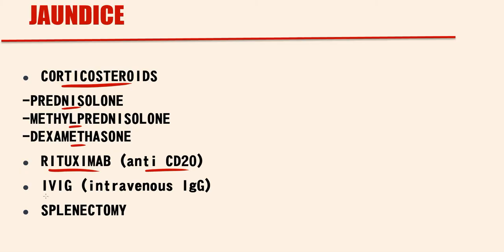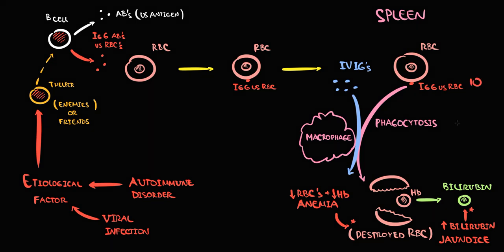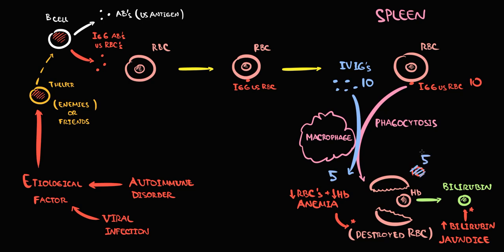The next option is intravenous immunoglobulin G, which causes a short-lived increase in red blood cells. The concept here is that with infusion of intravenous immunoglobulin G, we distract macrophages from the immunoglobulins bound to red blood cells — because macrophages do not care about red blood cells, they only like immunoglobulins. So instead of consuming all immunoglobulins on red blood cells, macrophages will also consume the injected immunoglobulins, effectively saving some red blood cells from destruction. As a result, they remain in circulation, causing an increase in red blood cell count.